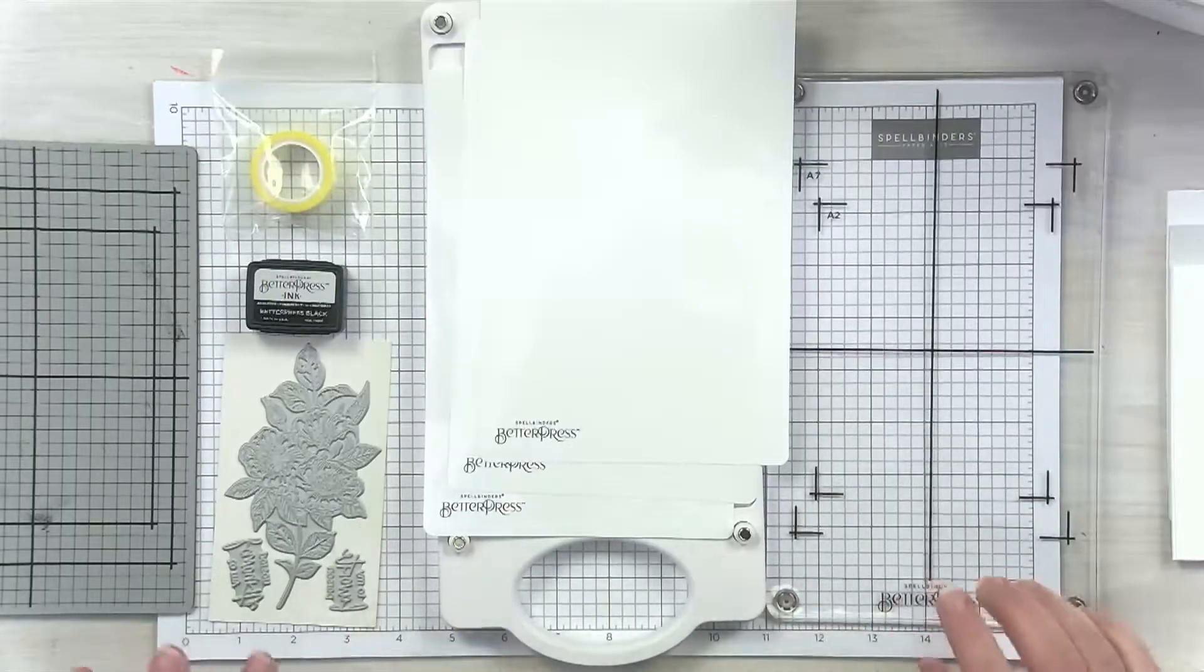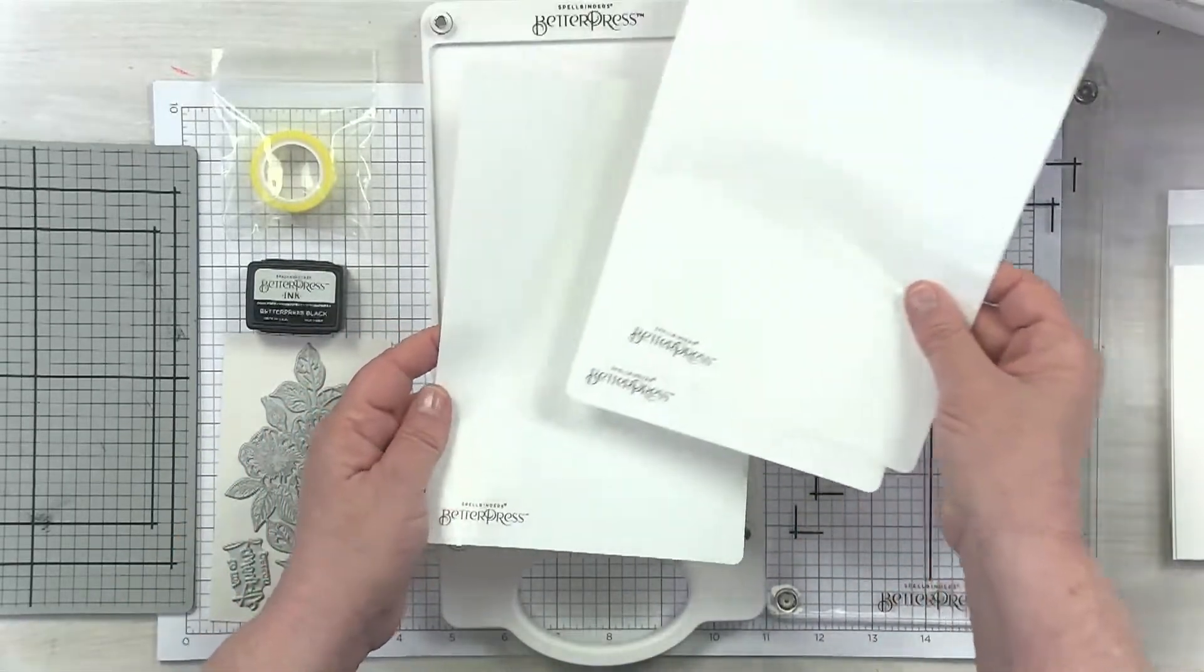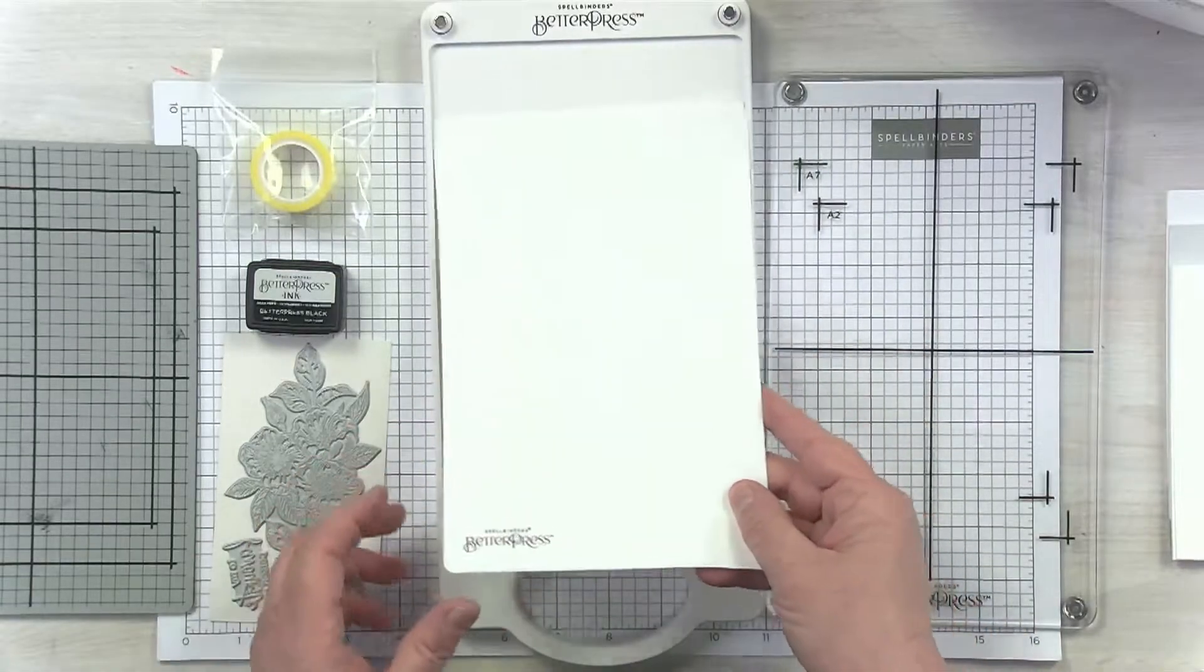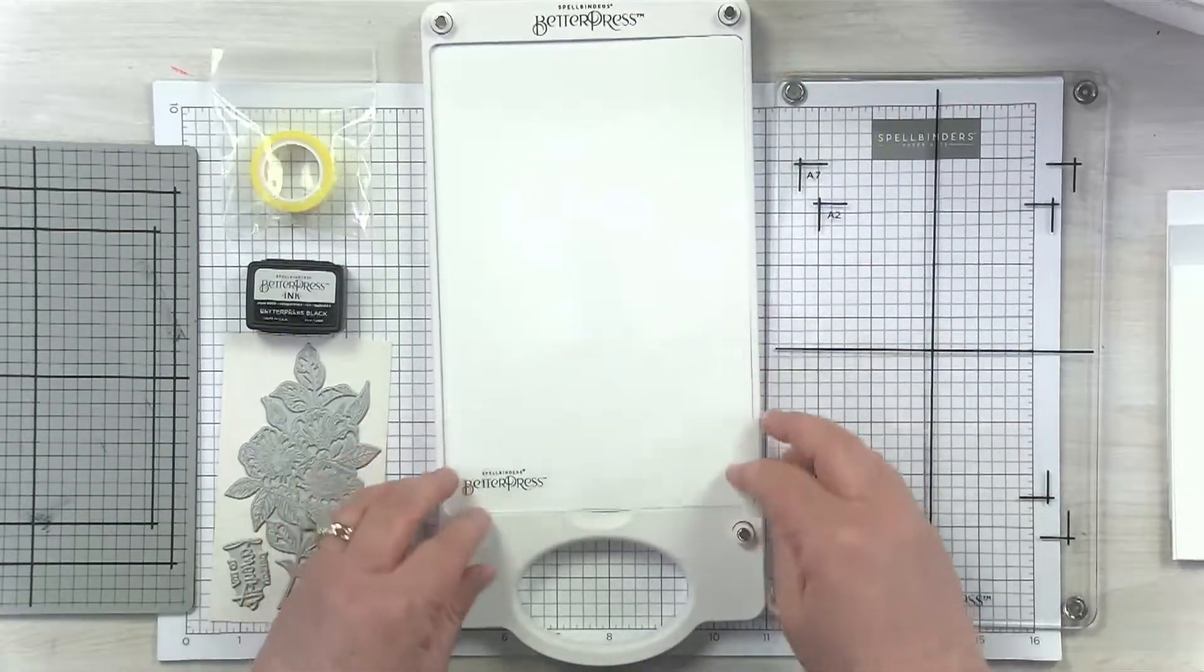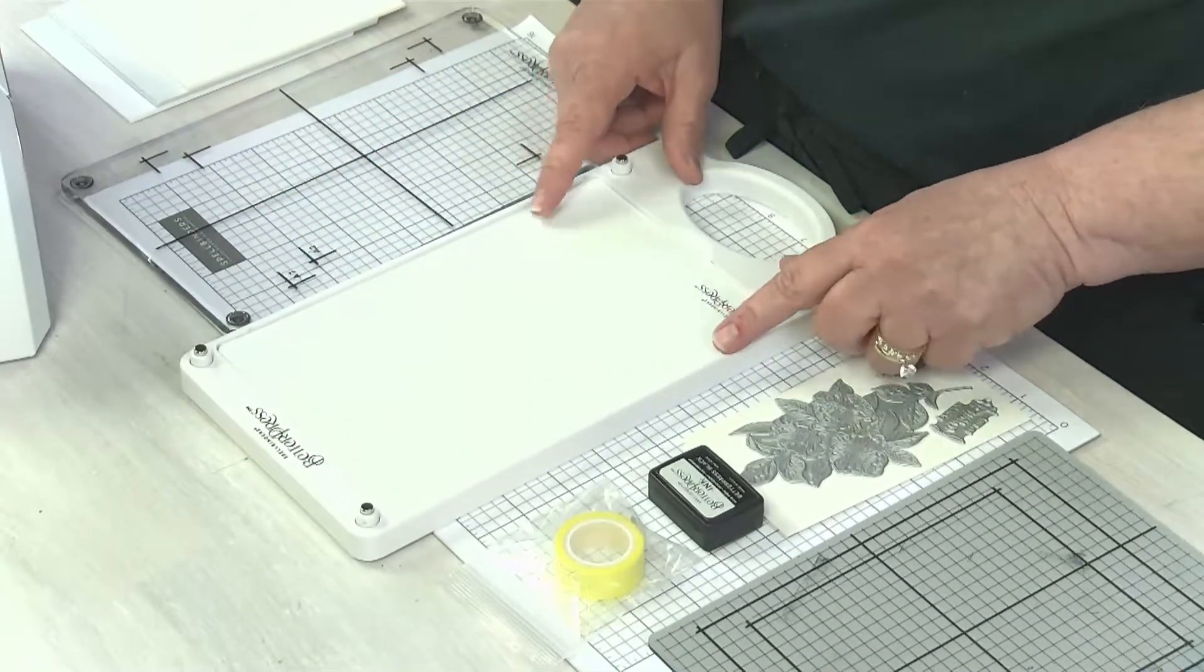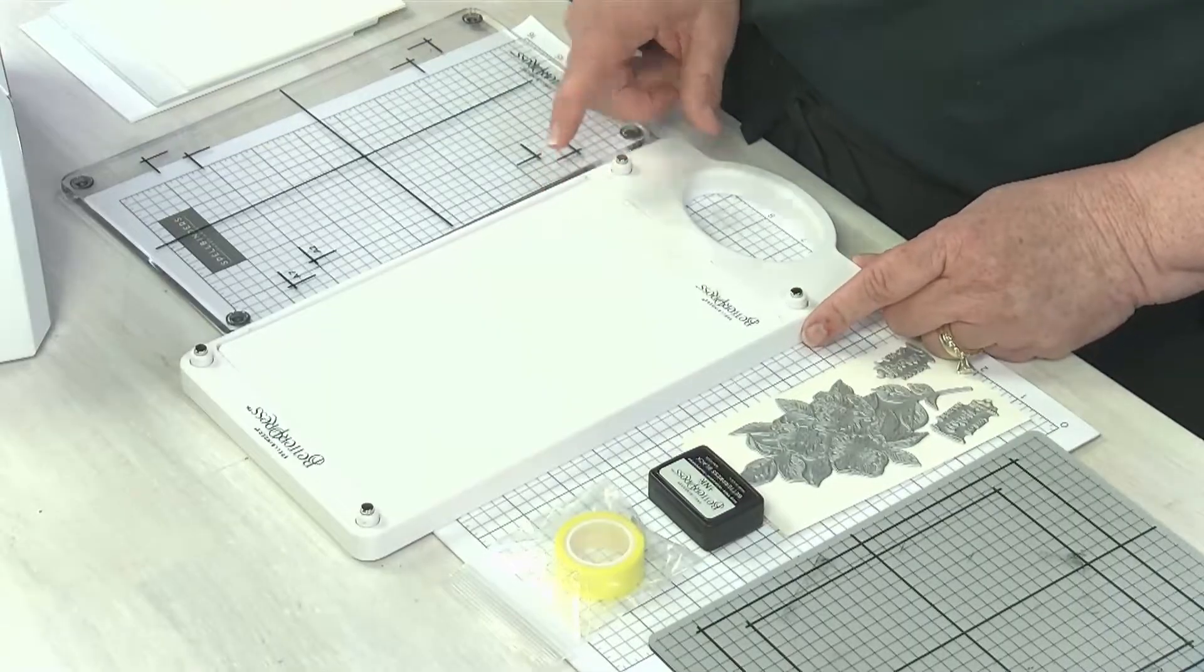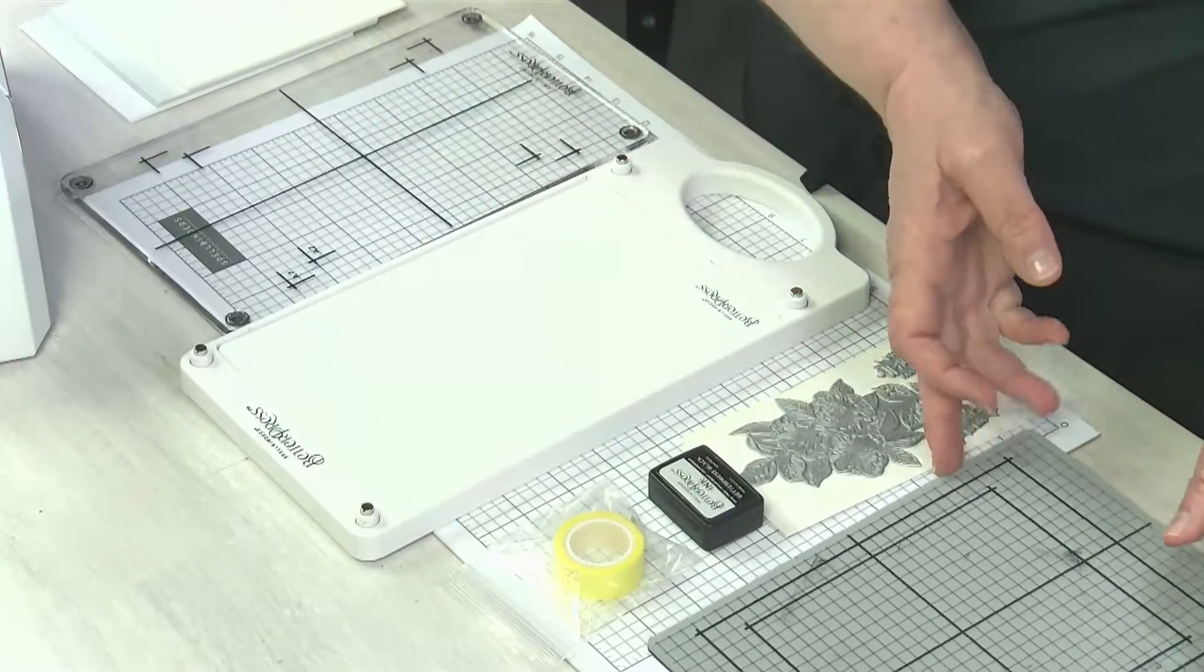We've got the Better Press system laid out here. As a reminder, the three shims that come in your system during unboxing go in the bottom of the chase. Just pop them right in there. We included these shims so if you later choose to use much thicker paper, you have the option of taking one out.